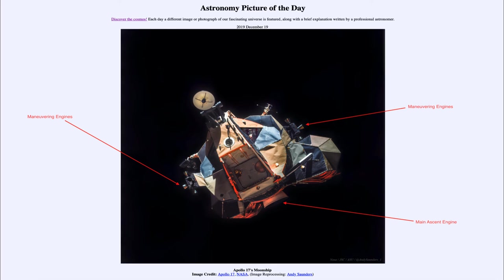Here we just needed the main rocket plus some maneuvering rockets to allow this to dock with the command module — which is where the picture was taken from — and to allow the astronauts to transfer back onto the command module, which would return them to earth. There are also thrusters along the side that would allow them to adjust their course so they could line up properly.